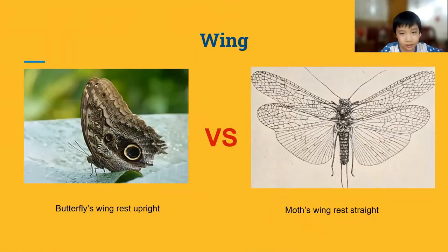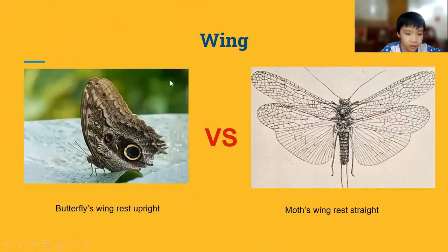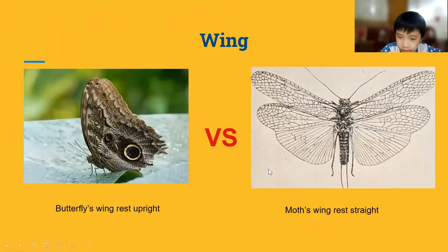Number two: wings. Butterflies' wings rest upright. Moths' wings rest flat.